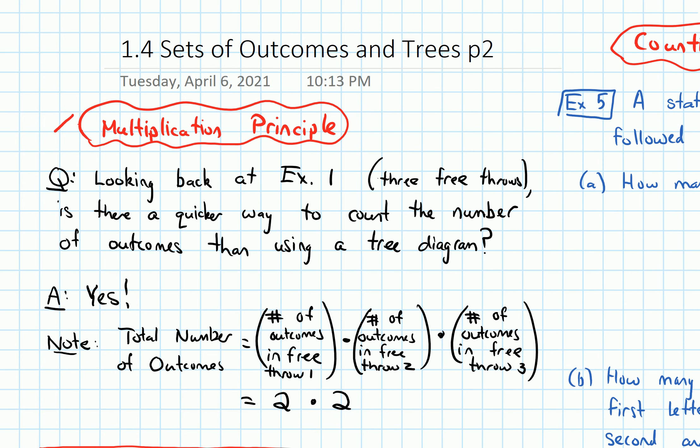So in free throw three, again, there's two outcomes because you can make it or miss it. And two times two times two, well, that's eight. That's the same value we got when we just counted it after drawing our tree diagram.